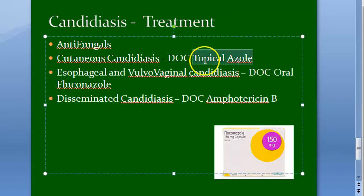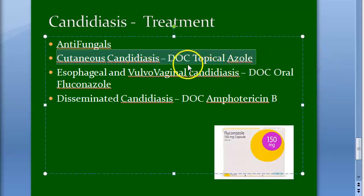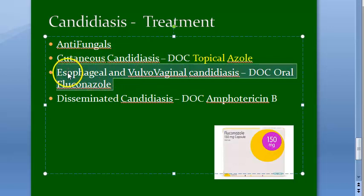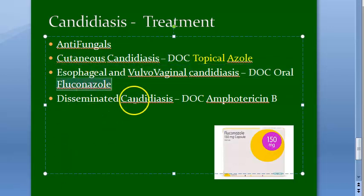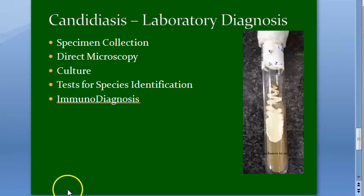For treatment: topical azole is used for cutaneous candidiasis including intertrigo, diaper candidiasis, perianal candidiasis, and erosio interdigitalis blastomycetica. Fluconazole is used for mucosal candidiasis such as vulvovaginitis and esophageal candidiasis. Amphotericin B is used for disseminated candidiasis.